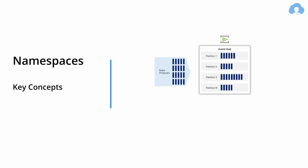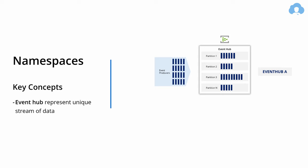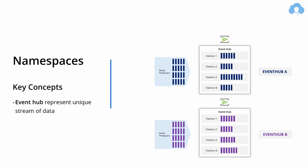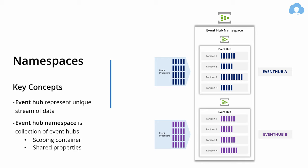You also have something called a namespace. A single Event Hub represents a unique stream of data — call it Event Hub A. If you need to process a second unique stream of data, you create Event Hub B. A namespace is the logical container for multiple event hubs. This is what you're going to create in the Azure portal — a scoping container that has multiple shared properties like shared throughput, shared cost, and so on. At this point, we can actually go to the Azure portal and create an Event Hub namespace.